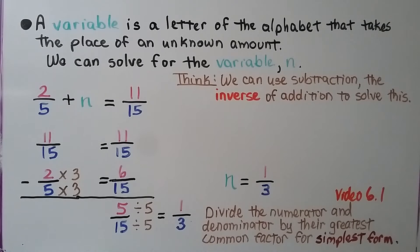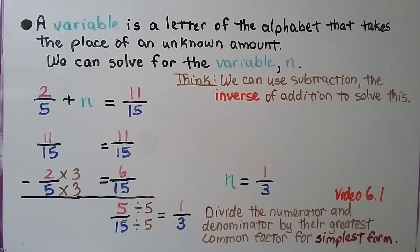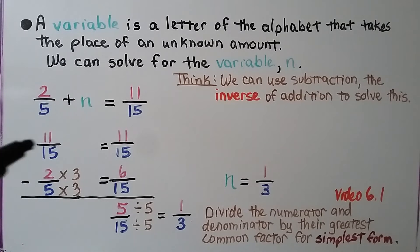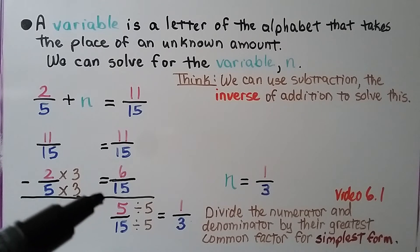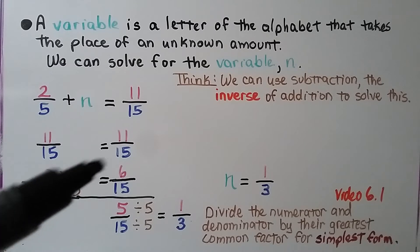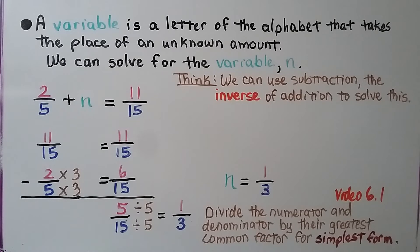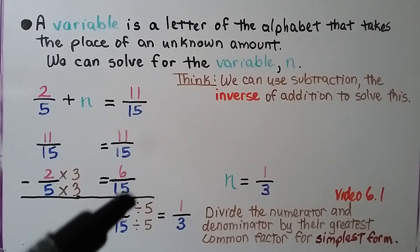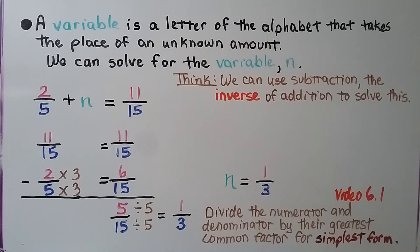A variable is a letter of the alphabet that takes the place of an unknown amount. We can solve for the variable n. We have 2 fifths plus n equals 11 fifteenths. We use subtraction, the inverse of addition: 11 fifteenths minus 2 fifths equals n. The 5 and the 15 meet at 15 because 5 times 3 equals 15. We multiply the numerator by 3 to get 6 fifteenths. Then 11 fifteenths minus 6 fifteenths equals 5 fifteenths. We divide by the greatest common factor 5: 5 divided by 5 is 1, and 15 divided by 5 is 3. So n equals 1 third.